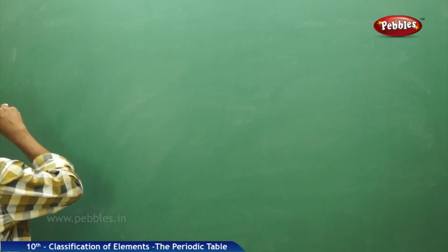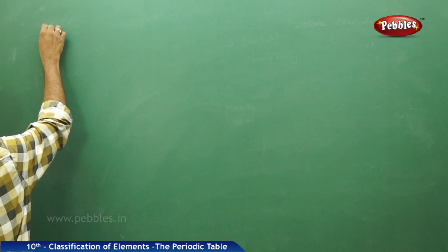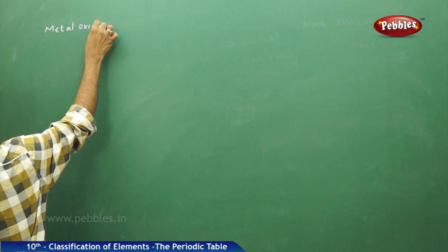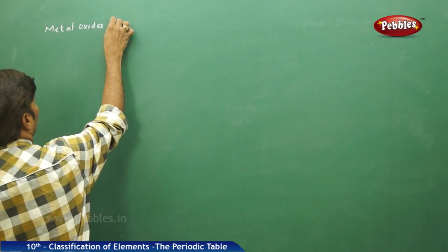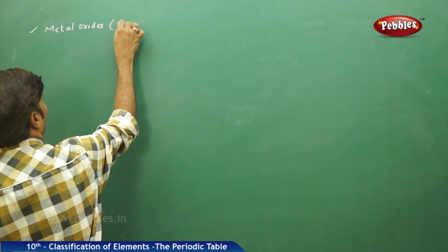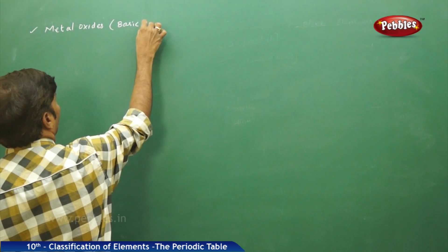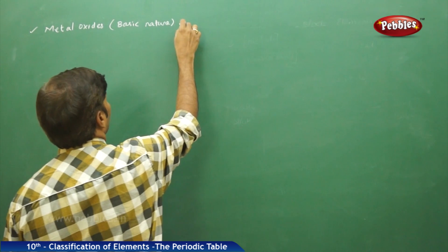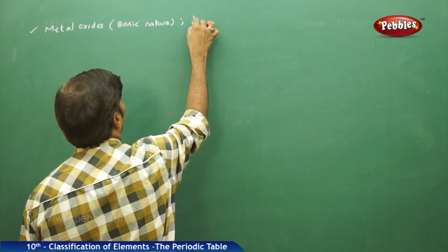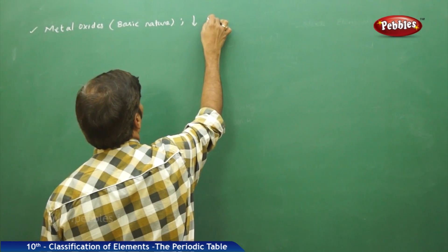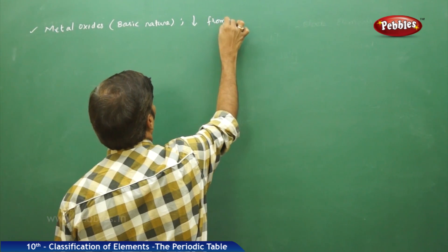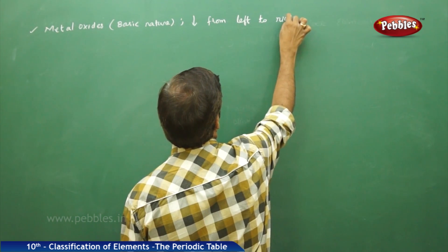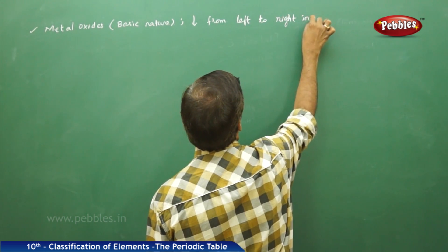If you go for metal oxides, which are basic in nature, the basic nature decreases from left to right in the periodic table.